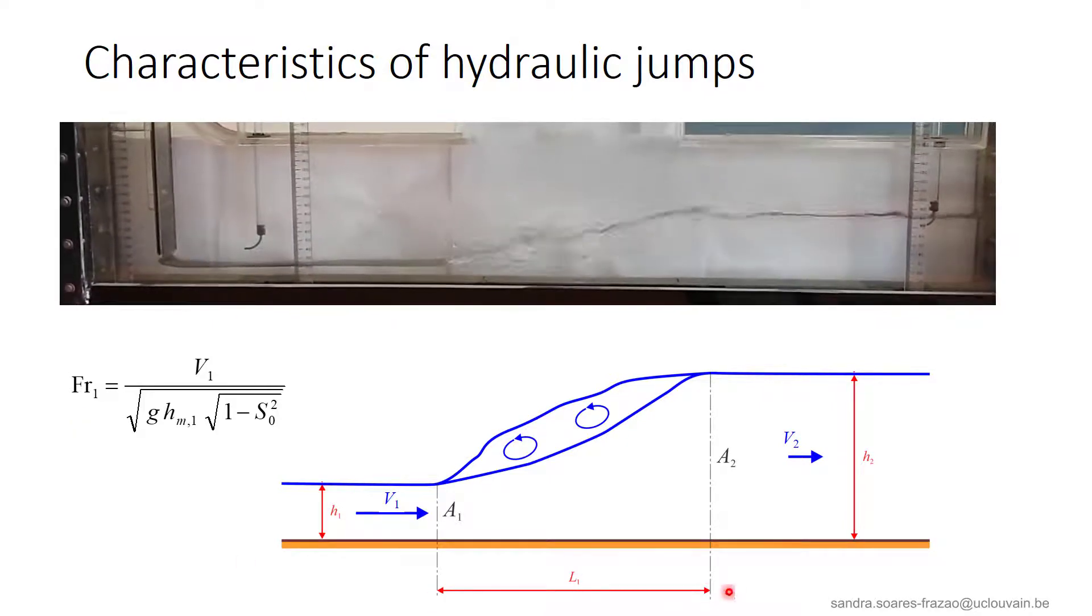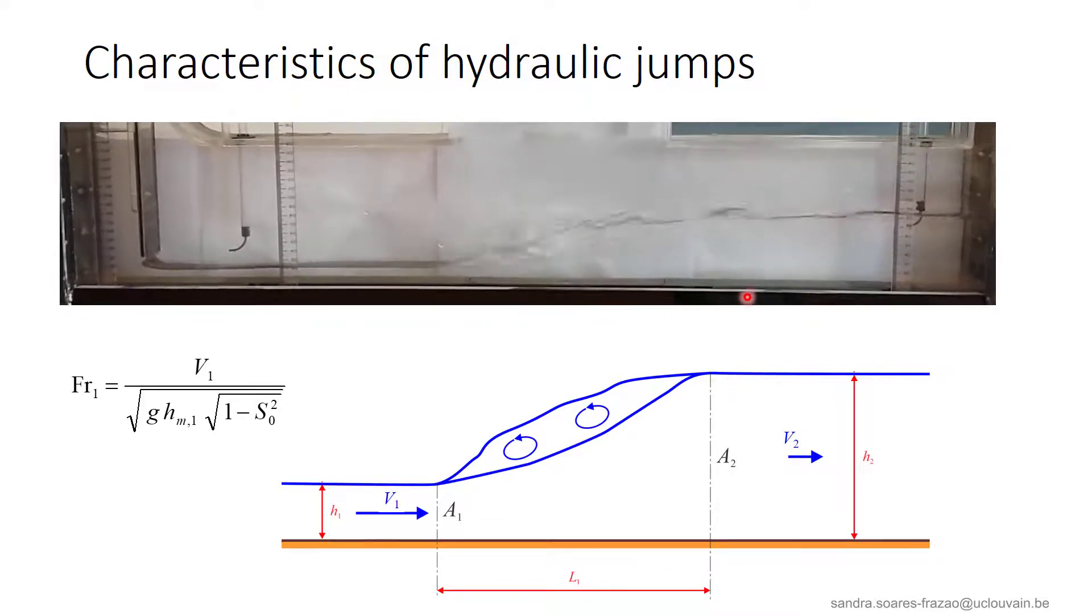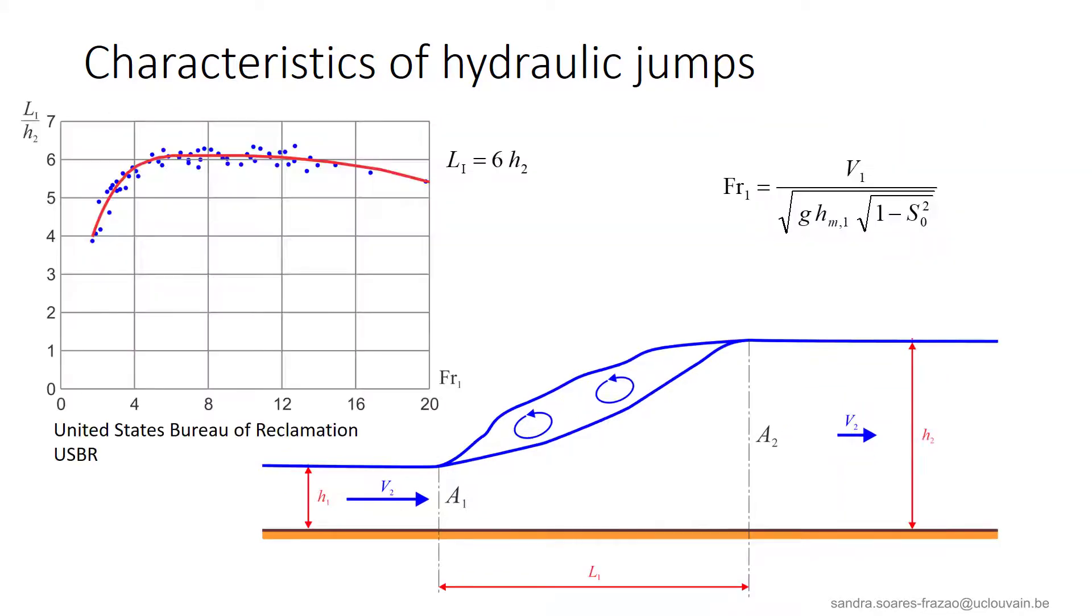So let us denote by L1 the length of the hydraulic jump, and we can see it here also in the movie. Experimental measurements performed at the USBR show that the length of the hydraulic jump is about 6 times the downstream water depth h2. So at the scale of a river, with water depths of about 5 meters for example, the length of the hydraulic jump would be about 30 meters, which can be considered as negligible compared to the length of a river reach, that is often several kilometers. Therefore, the hydraulic jump will usually be represented as a sharp transition, as we will see when deriving the equations.